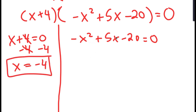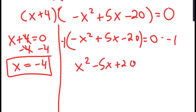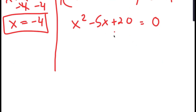For negative x squared plus 5x minus 20 equals 0, we have a negative sign in front of x squared, so I'm going to get rid of that by multiplying both sides by negative 1. So I get x squared minus 5x plus 20 is equal to 0.